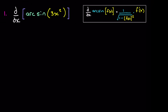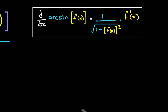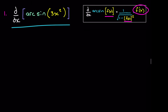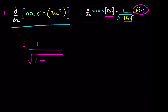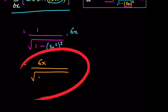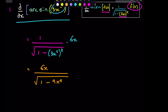Question one: differentiate arc sine of 3x squared. Remembering that when we have a function of x, we square it on the denominator under the radical and multiply by its derivative. This gives us 1 over root 1 minus (3x) all squared, multiplied by the derivative which is 6x. Tidying up, we get 6x over root 1 minus 9x to the 4, and that is the end of question one.